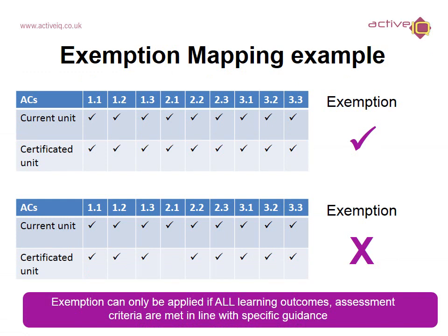Here is an example of the exemption mapping that you will need to complete with the learners to show the exemption can be accepted. The first illustration shows the assessment criteria across the top, which is 1.1 to 3.3, and the ticks in the current unit that the learner is completing, and also shows the certificated unit. Here you can see all of the assessment criteria maps into the current unit, so this exemption would be accepted. The second illustration again shows the assessment criteria from the current unit and also against the certificated unit, in which assessment criteria 2.1 has not been covered by the certificated unit. Therefore the exemption would not be accepted — there are clear gaps.